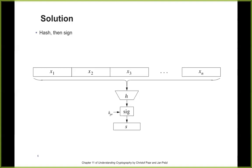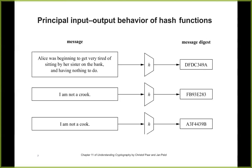Hash functions actually break your message into blocks and process them block by block, which leads to a variety of weaknesses. The famous attacks exploit this. You take a message of any length, hash it, and get a message digest. A short hash like CRC-32 (used in Ethernet) is only useful to detect random errors, not malicious modifications.